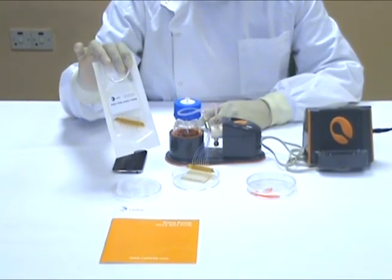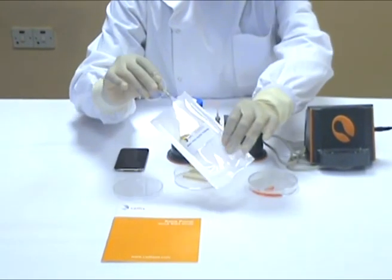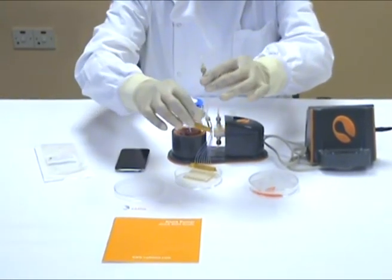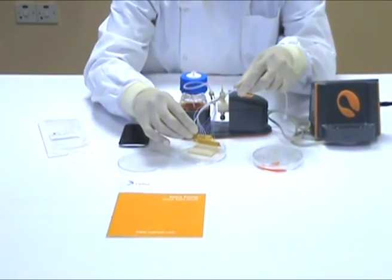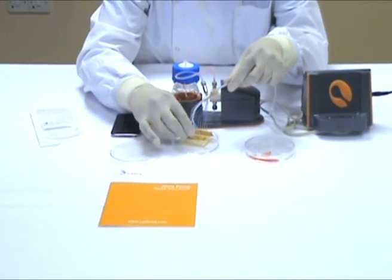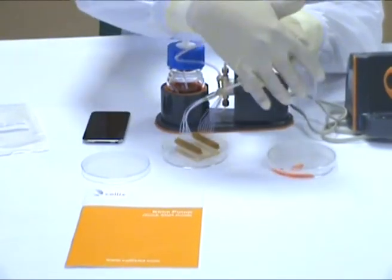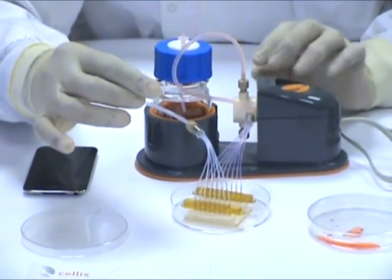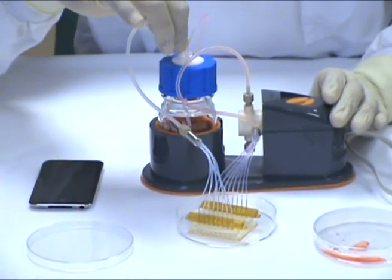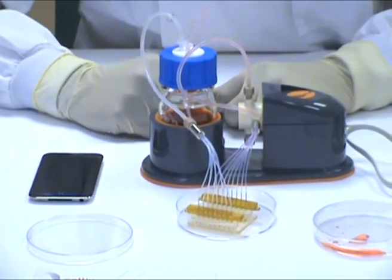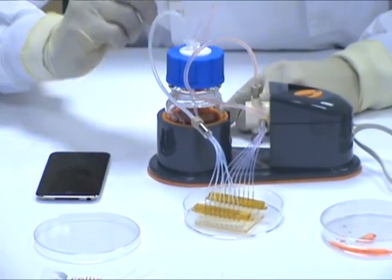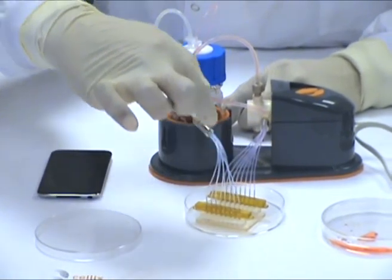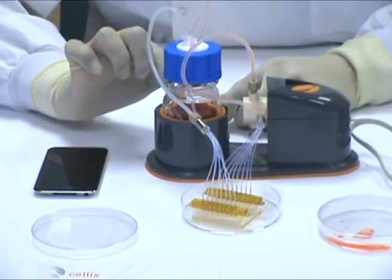Now take the chip outlet tubing. Connect it to the other side of the chip. The other end of the tube goes back to the bottle. So this is the way the media is recirculated through the tube to the chip. And from the output of the chip, it goes back into the bottle.